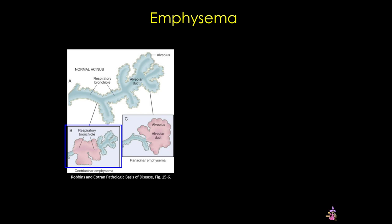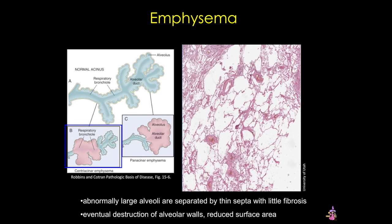Advanced emphysema often produces huge lungs that frequently overlap the heart. Histologically, abnormally large alveoli are separated by thin septa with only minimal fibrosis. There is loss of attachments of the alveoli to the outer wall of the small airways. The pores of Kohn are so large that the septa appear to be floating or protruding blindly into the alveolar spaces with a club-shaped end. As alveolar walls are destroyed, there's a decrease in capillary bed surface area, and with advanced disease, even larger abnormal air spaces and vascular changes occur, all leading to a reduction in gas exchange.